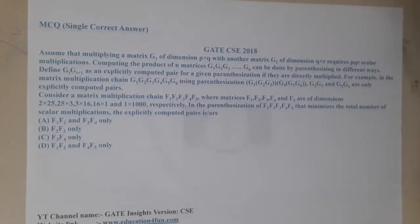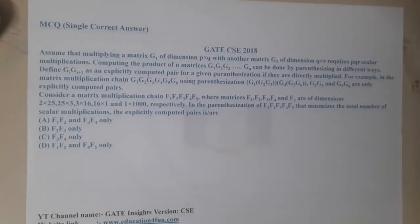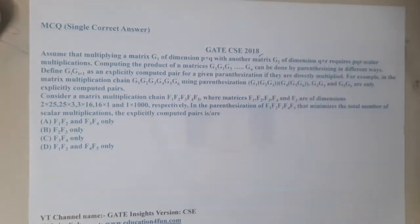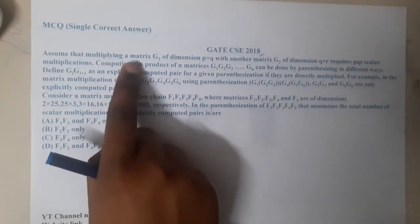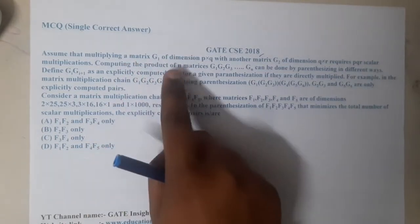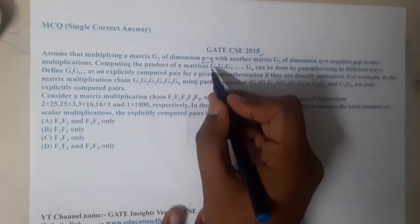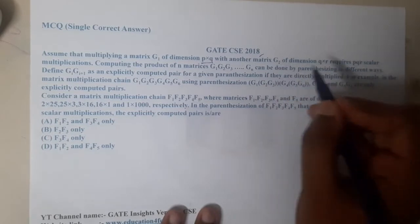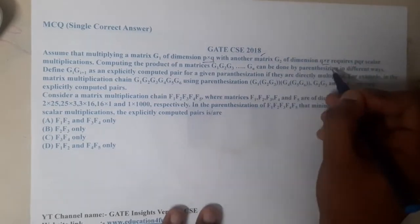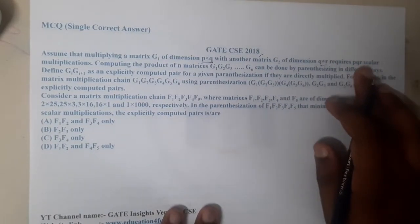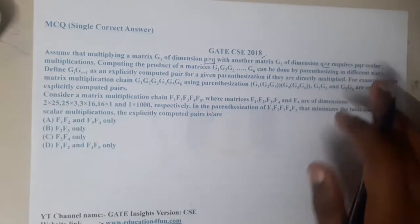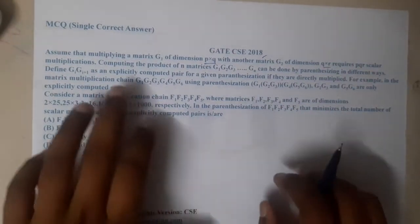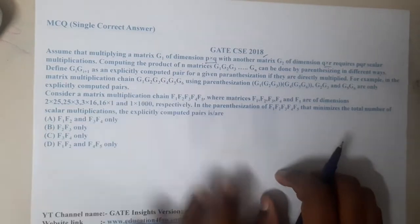Hello guys, we are back with our next lecture. This question belongs to GATE CSE 2018. The question is: assume the multiplication of a matrix g1 of dimension p×q with another matrix g2 of dimension q×r requires p·q·r scalar multiplications. This question belongs to matrix chain multiplication.